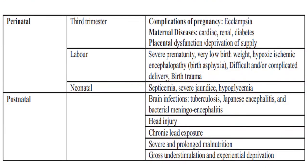Perinatal etiologies include third trimester complications such as eclampsia, maternal disease (cardiac, renal, diabetes), placental dysfunction; labor-related causes such as severe prematurity, very low birth weight, hypoxic-ischemic encephalopathy (birth asphyxia), difficult delivery or birth trauma; and neonatal causes including septicemia, severe jaundice, and hypoglycemia. Postnatal causes include brain infections (tuberculosis, Japanese encephalitis, meningitis, encephalitis), head injury, chronic lead exposure, severe prolonged malnutrition, and gross understimulation and experiential deprivation.